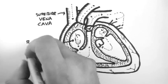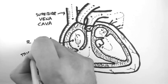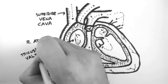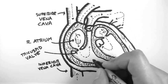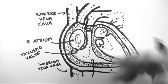Then it moves through the tricuspid valve. It's named tricuspid because it has three cusps, into the right ventricle.